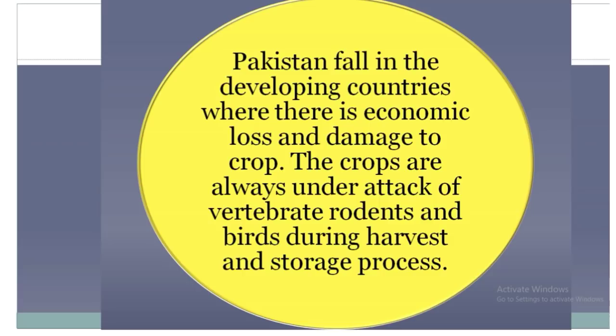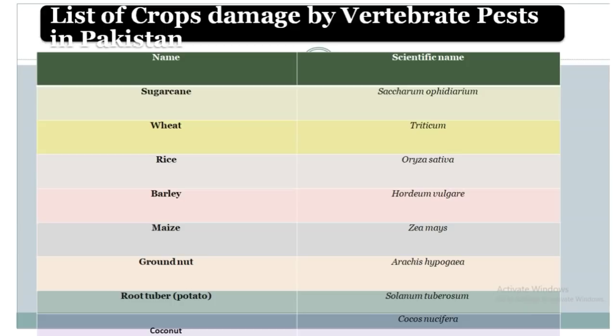List of crops damaged by vertebrate pests in Pakistan: sugarcane, field crops, rice, barley, maize, groundnut, root tuber, and coconut.